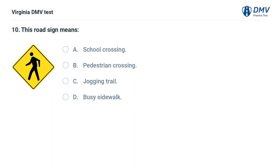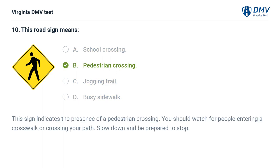This road sign means: A. School crossing, B. Pedestrian crossing, C. Jogging trail, D. Busy sidewalk. The correct answer is B: Pedestrian crossing. This sign indicates the presence of a pedestrian crossing. You should watch for people entering a crosswalk or crossing your path. Slow down and be prepared to stop.